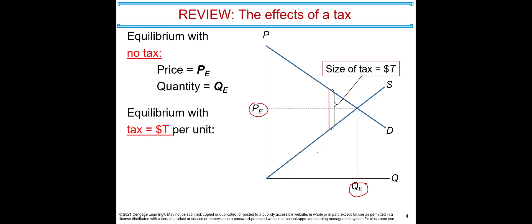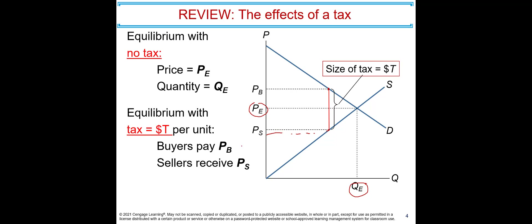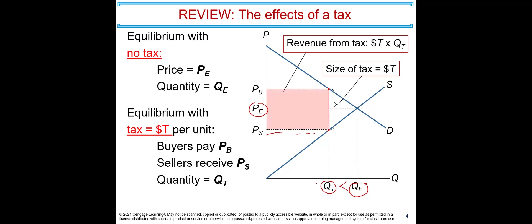On this screen you see that the equilibrium price and quantity without tax are labeled as Pe and Qe. Now let's impose a tax of T dollars. This tax creates a wedge: buyers pay Pb and sellers receive Ps. The quantity with tax Qt is lower than the equilibrium quantity without tax. Tax revenue equals T dollars times Qt.